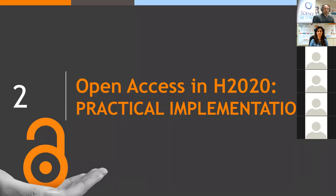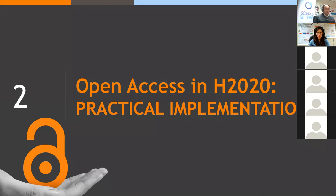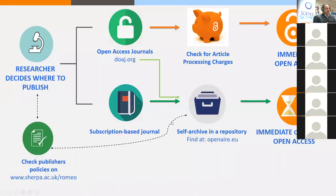So we now have all the details about the requirements, which are well explained. We will add some practical, added-value information about specific topics within the requirements. We can see a diagram representing a summary of the practical implementation: you can publish in an open access journal or in a subscription-based journal. For a subscription-based journal, you need to self-archive in a repository and you will have immediate or delayed open access depending on whether you have an embargo. You should always deposit in a repository, as Antonia said, and it's important to always check publisher policies.